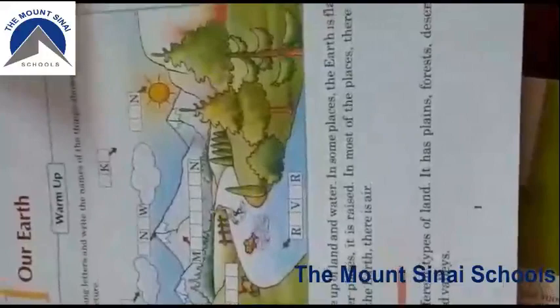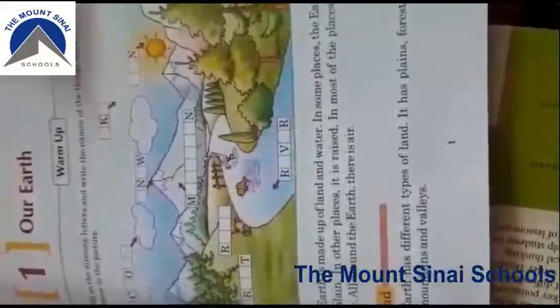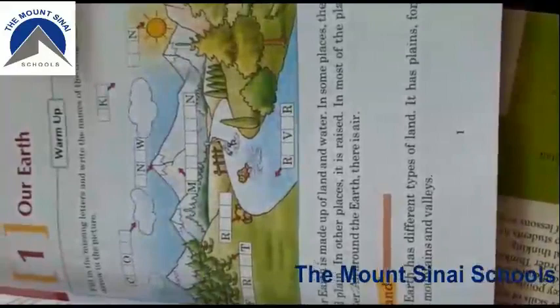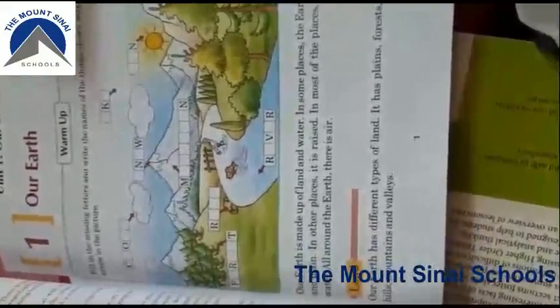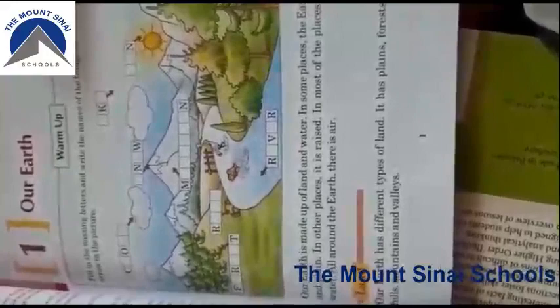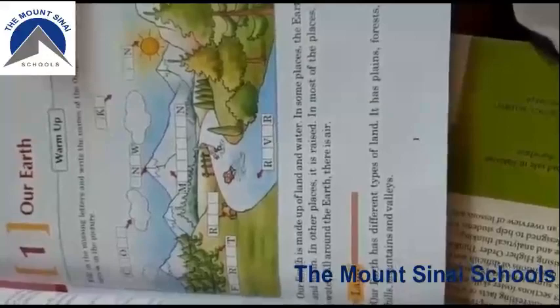Let's start our unit, which is about the earth and how the earth is divided into different parts. Our earth is made up of land and water. In some places the earth is flat and plain — as we are living in the Punjab, it is a flat and plain area. In other places it is raised, and those are the mountains — we call them hilly areas or mountainous areas.